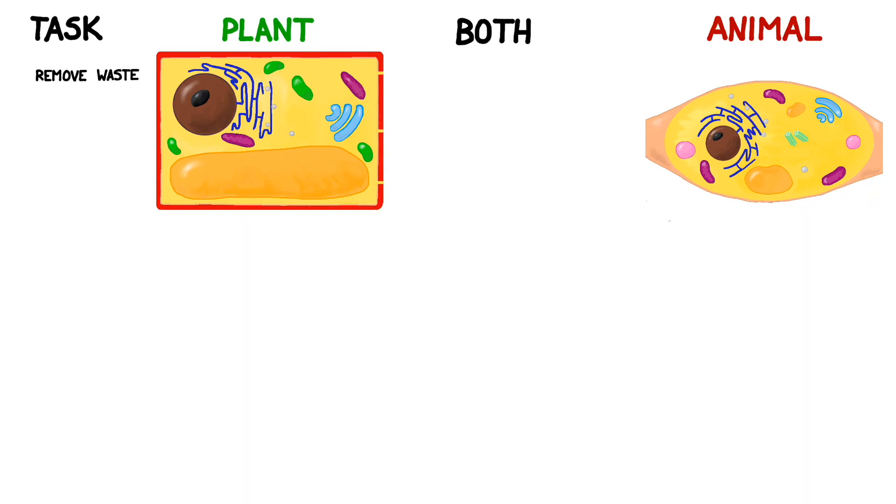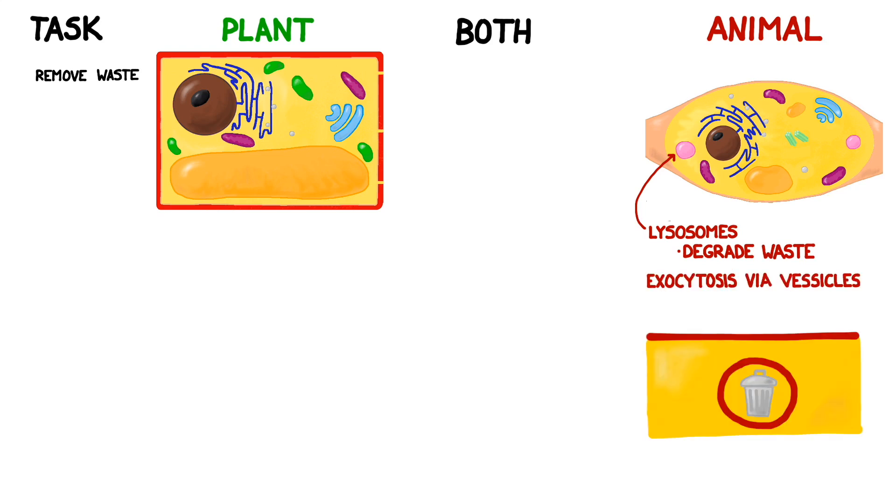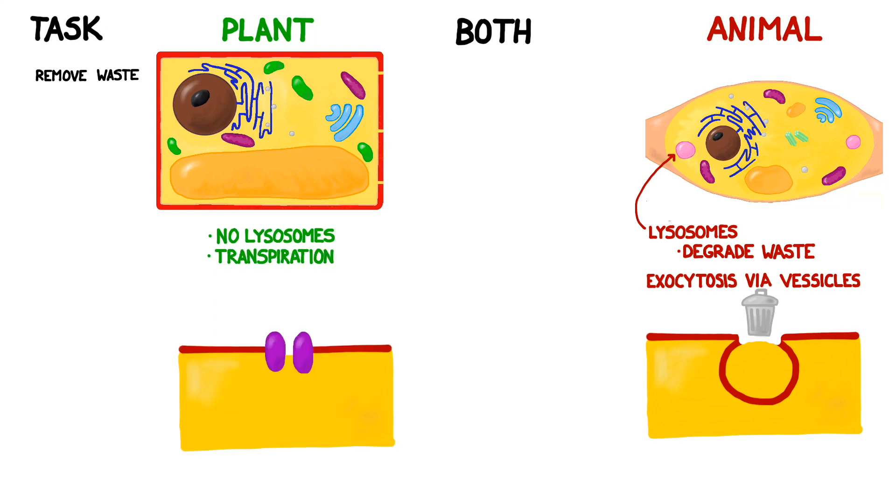All living things produce waste, but plant and animal cells have different methods for getting rid of it. In animal cells, enzyme-filled sacs called lysosomes degrade waste products. They also perform a process called exocytosis, where a waste-filled vesicle docks up against the cell membrane and releases its contents. Plants don't have lysosomes, but they can release gases via transpiration through their stomata, and they can also use enzymes called proteases to degrade proteins, although these are not well understood.